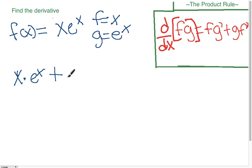So our g is e to the x. And of course the derivative of x is just 1.